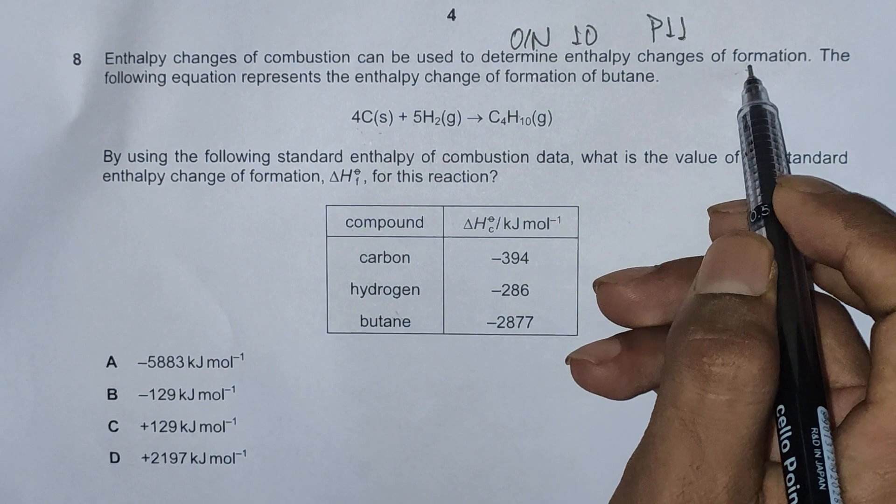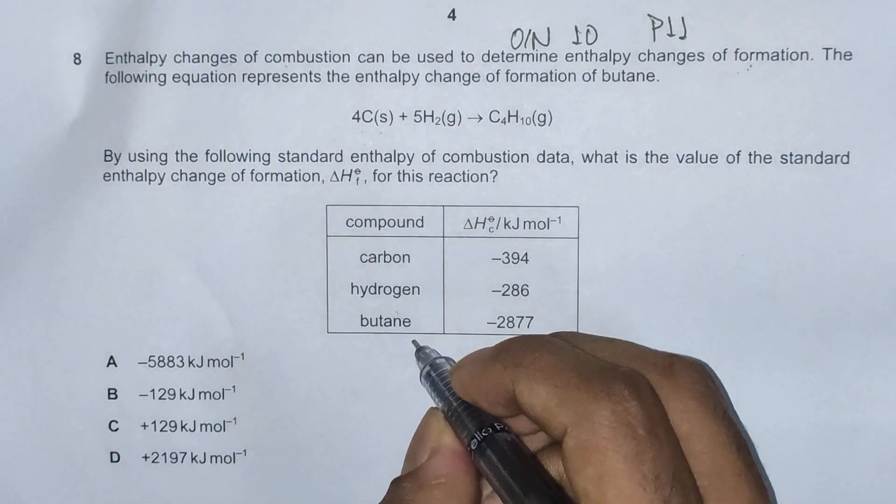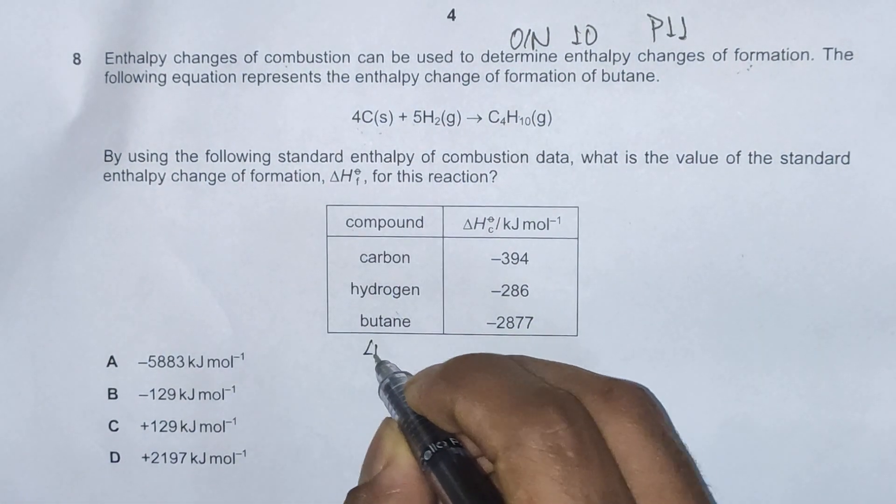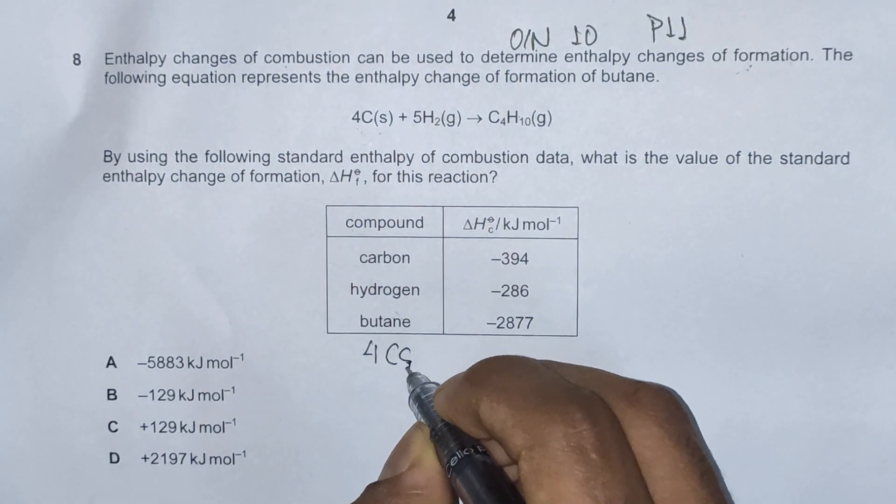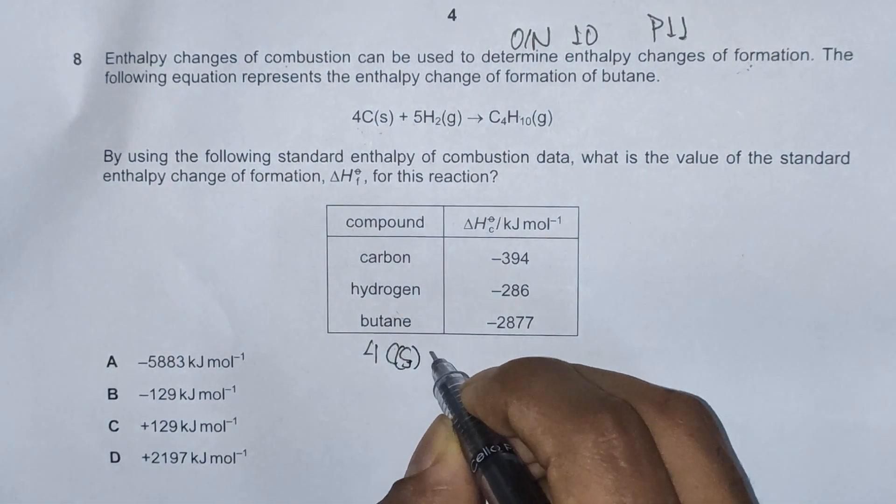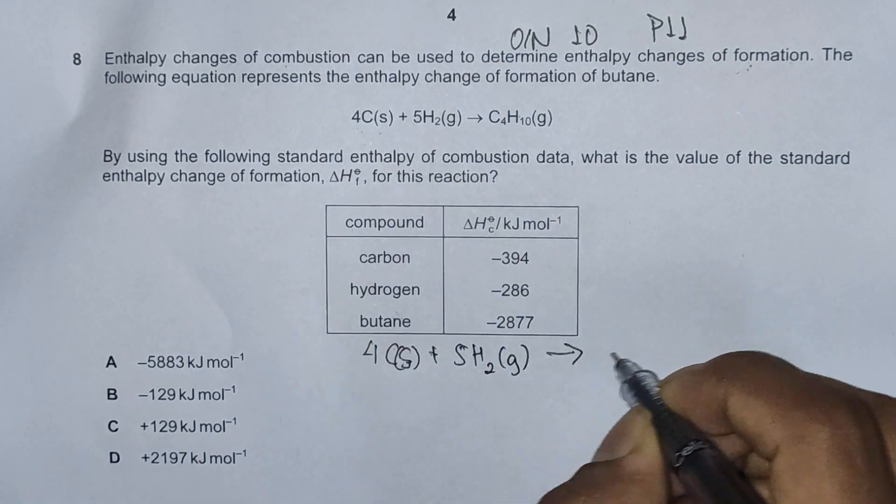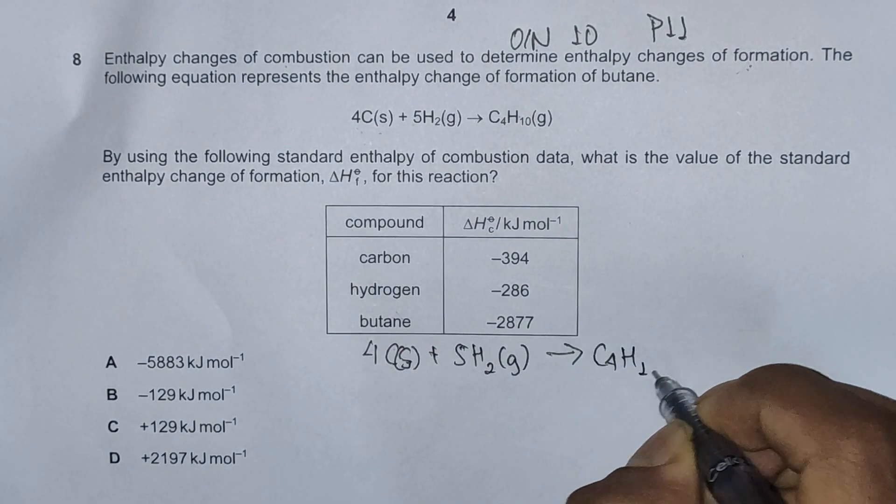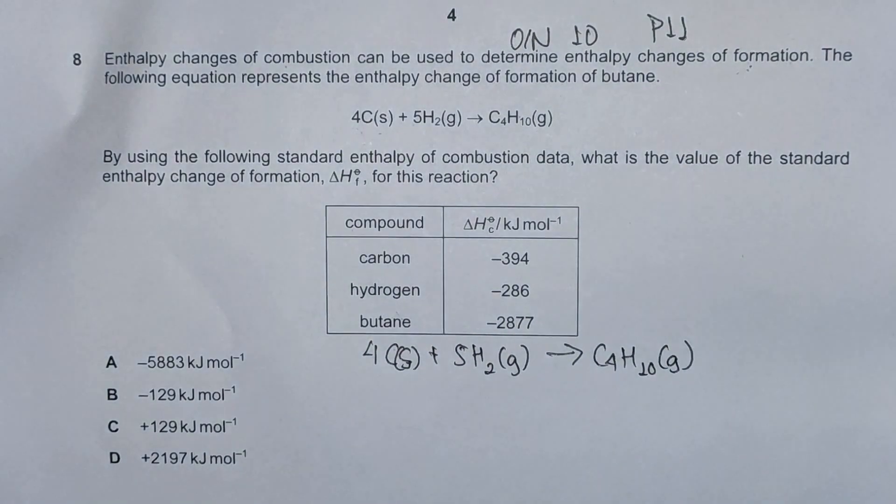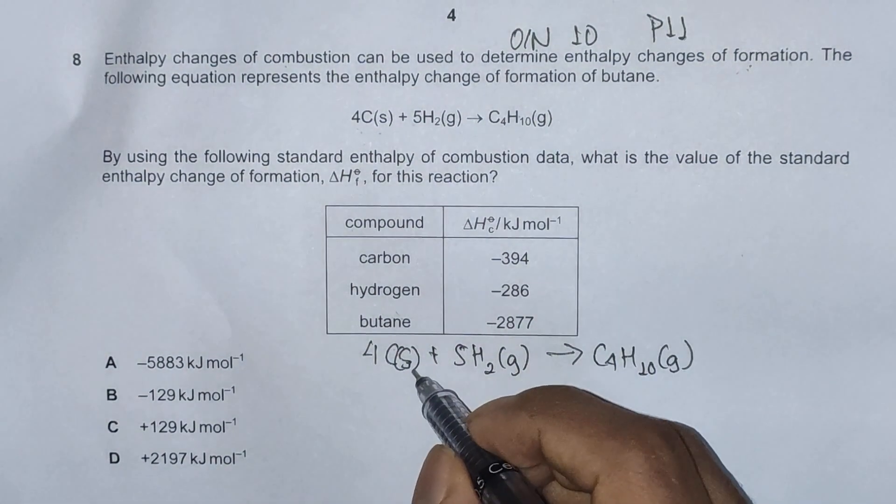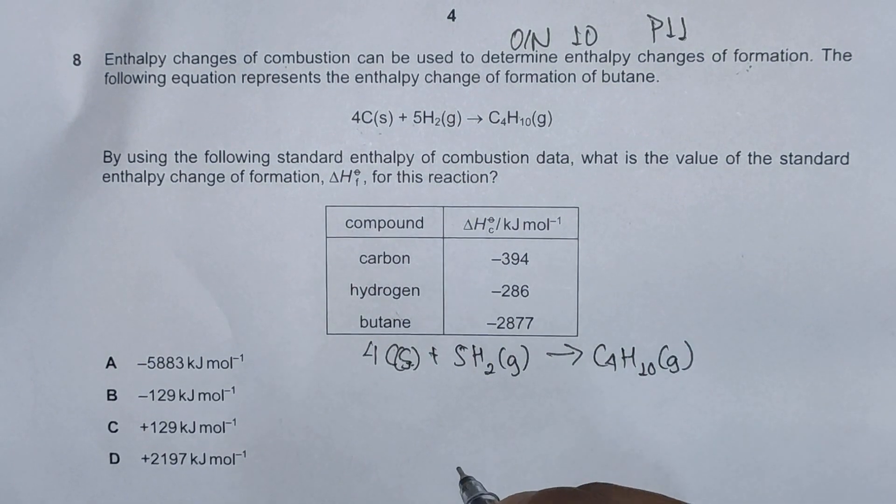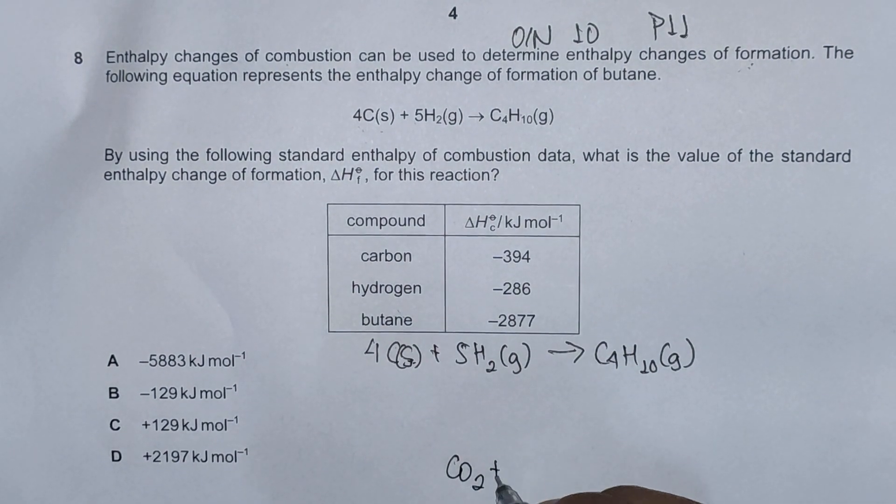Constructing and determining enthalpy of formation from combustion, the cycle should be the following. First we'll just copy the same equation here: 4 carbon plus 5 hydrogen gives us butane. Now combustion means addition of oxygen, so when we add oxygen to both of these we'll get carbon dioxide and water gas.